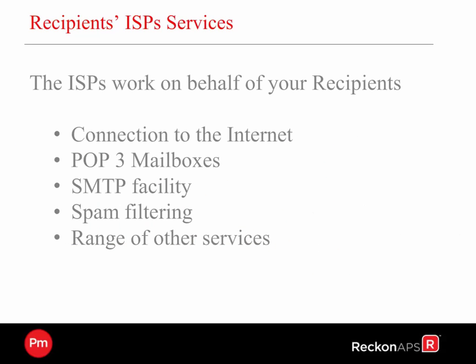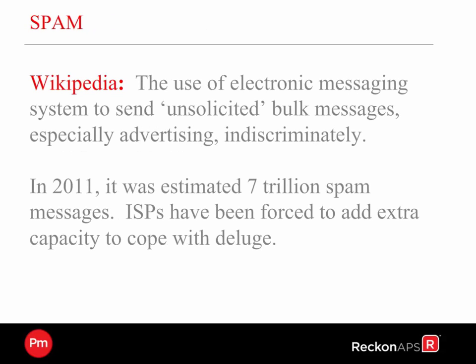So what do the recipient's ISP services do? They connect to the internet, they create the mailboxes, and they have their own SMTP facilities that include spam filtering and a range of other services. So what exactly is spam? It's the use of electronic messaging to send unsolicited bulk email messages, especially advertising indiscriminately. If we go back to 2012, it was estimated that 7 trillion spam messages were sent.